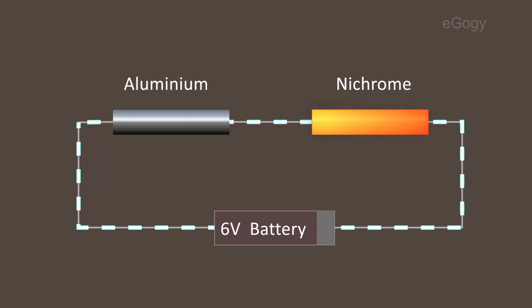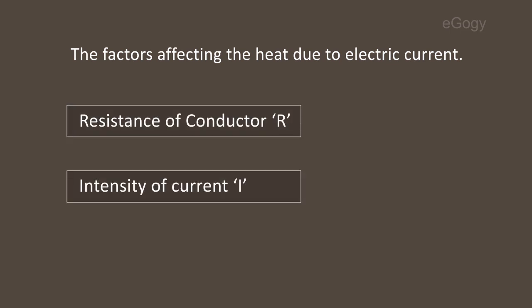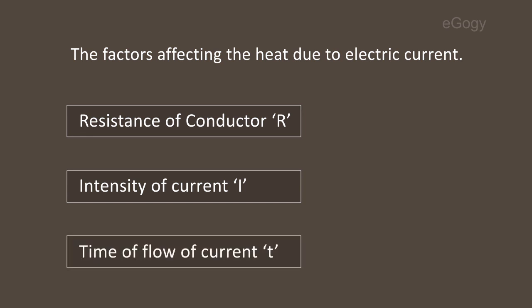Now let's see what are the factors affecting the heat due to electric currents: resistance of the conductor R, intensity of electric current I, and time of flow of the current T. These factors affect the heating effect of electric current.